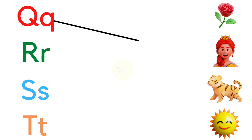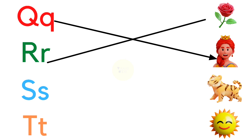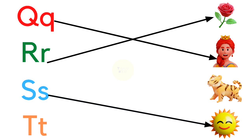Q for Queen, R for Rose, S for Sun, T for Tiger.